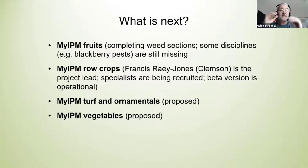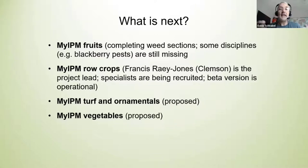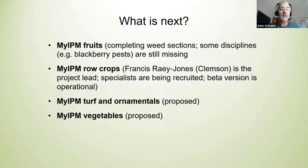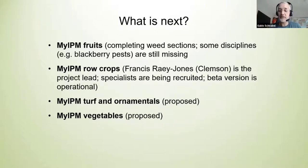So what's next? The current MyIPM app covers fruits, and it's missing a few sections here and there that we're still working on — for example, blackberry pests. We are currently working on the weed sections. Together with Katie Jennings and Wayne Mitchum, we decided to keep it at two weed sections for now: one for perennial crops and one for plastic culture. We're probably not going to do a weed section for each crop — that would be too much.